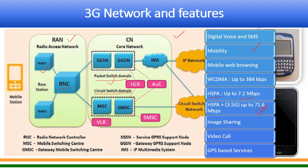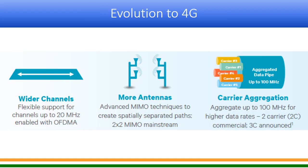Now let us look at the evolution from 3G to 4G. Again Shannon's theorem comes into picture: from 5 MHz in 3G, in 4G the channel bandwidth used was up to 20 MHz — starting from 1.4 MHz, 5 MHz, 10 MHz, up to a maximum of 20 MHz. The waveform chosen for 4G was OFDMA (Orthogonal Frequency Division Multiple Access). Wider channels were used, advanced MIMO techniques were used — for example, 2x2 MIMO means 2 transmitters and 2 receivers on both sides — and of course carrier aggregation.